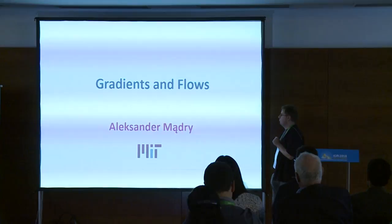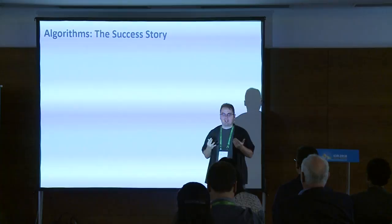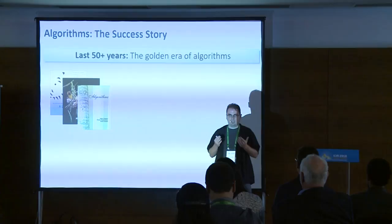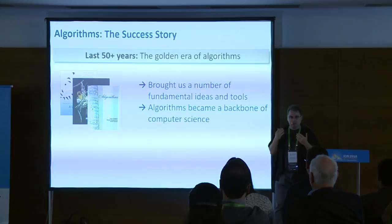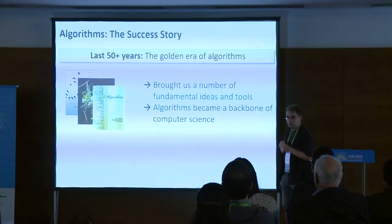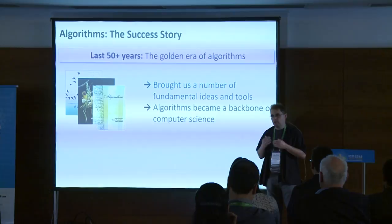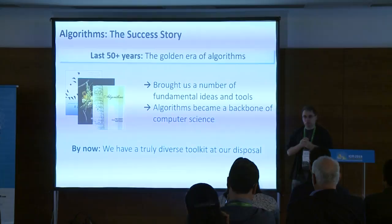Algorithms is really a great success story. By now we have 50-plus years of work on this subject, and over time we had all these beautiful algorithms that somehow ended up being the backbone of what we think of as computer science nowadays. From a theory point of view, we had a lot of beautiful ideas that allow us to think about these complex objects in a very nice way. By now we have all of this understanding, and if you take an undergrad algorithms class, you will learn a lot of beautiful stuff.